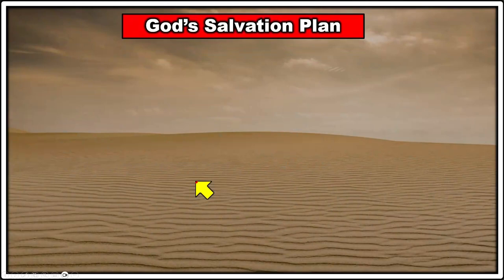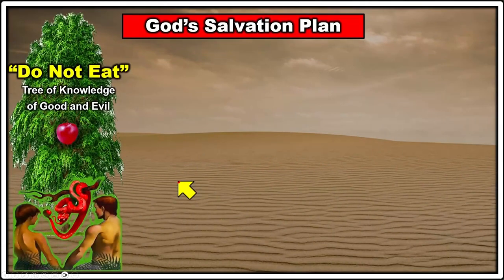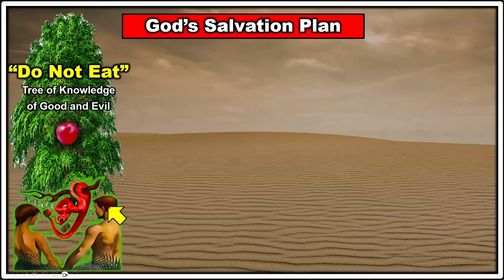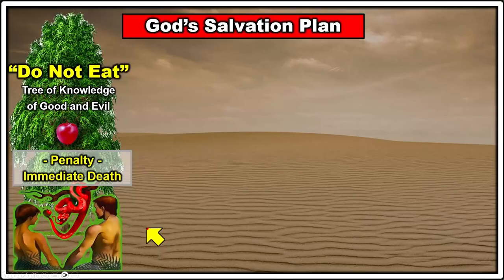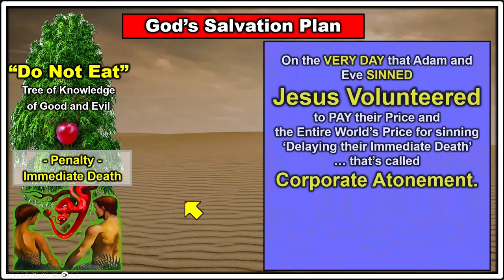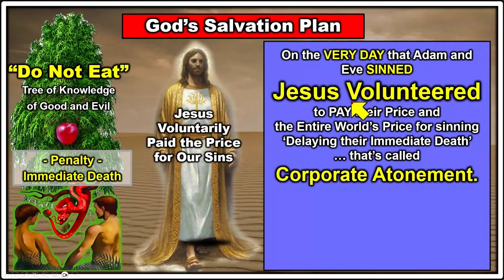Let's take a look at God's salvation plan. God created Adam and Eve and put them in the garden. There was a tree called the tree of knowledge of good and evil, and God told them: 'Do not eat of that tree, for in the day that you eat of it you will pay a penalty — immediate death.' So on the very day that Adam and Eve sinned, Jesus volunteered to pay their price and the entire world's price for sinning — delaying their immediate death. This is what I'm calling corporate atonement.